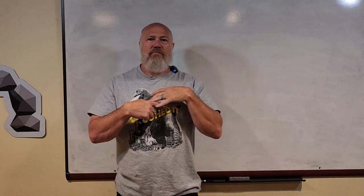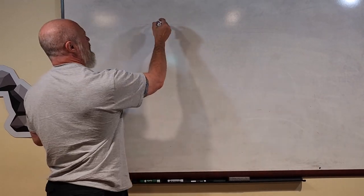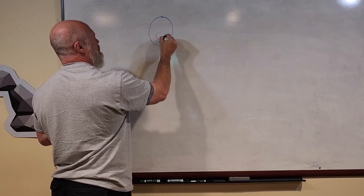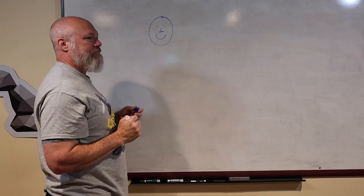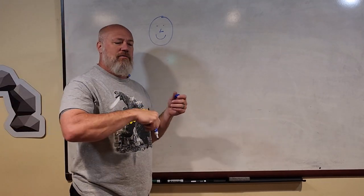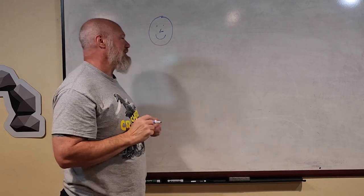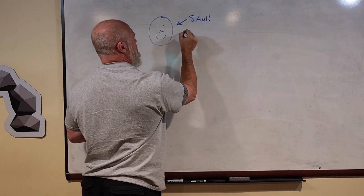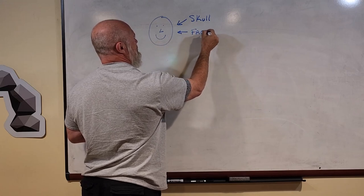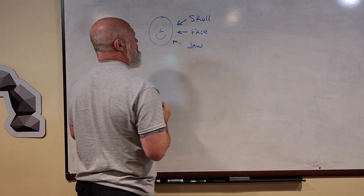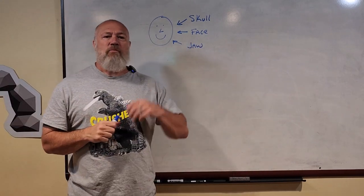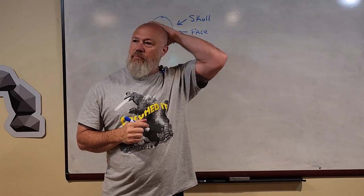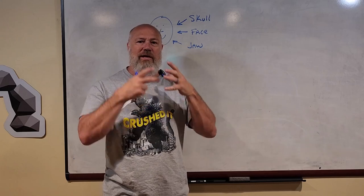The axial skeleton runs right down the middle. If I had no arms or legs, I'd have just my axial skeleton. It starts with your head, which is made up of three parts: your skull, your face, and your jaw. You can jot these down in a notebook while watching these anatomy videos. Your skull, face, and jaw — those three parts make up your head.